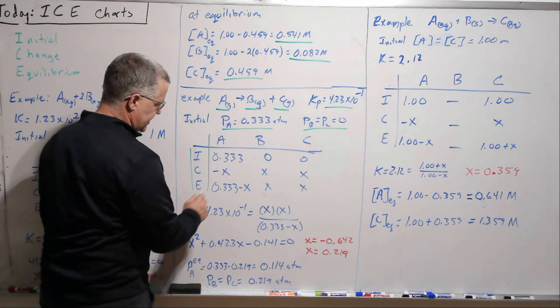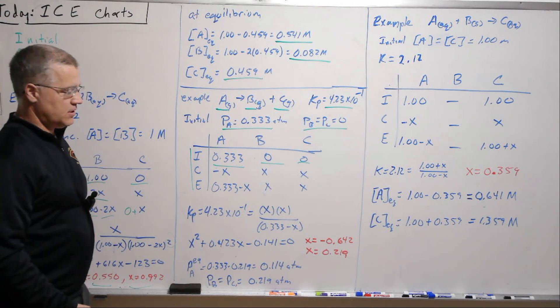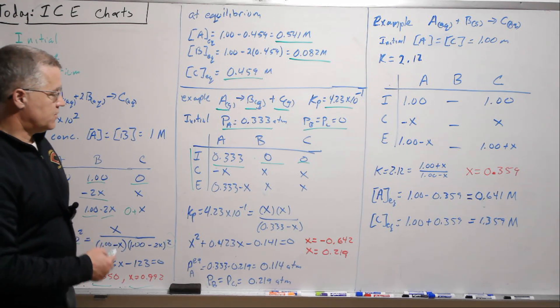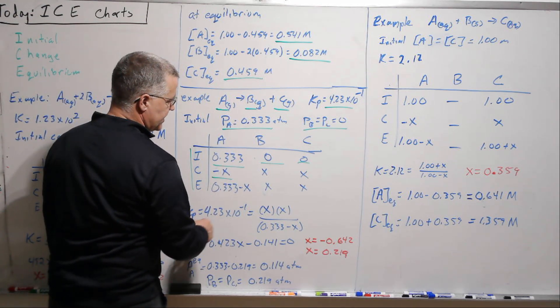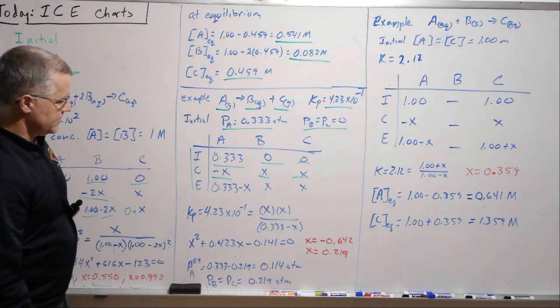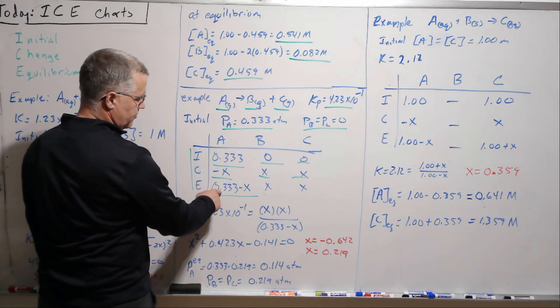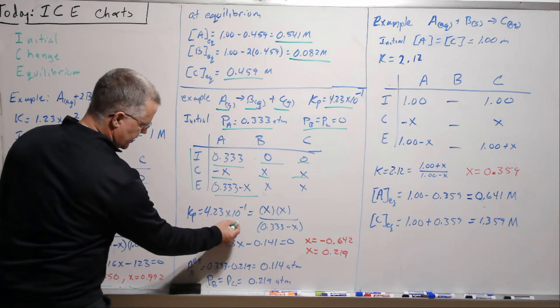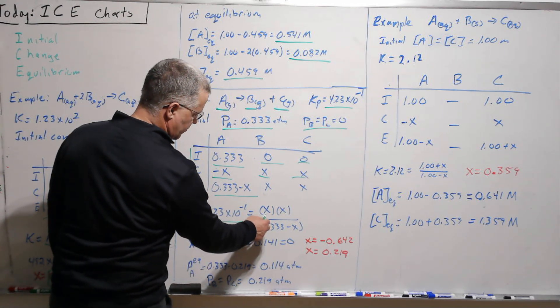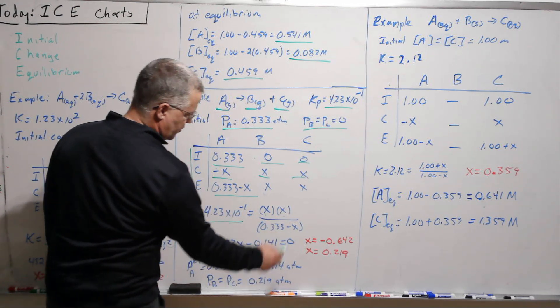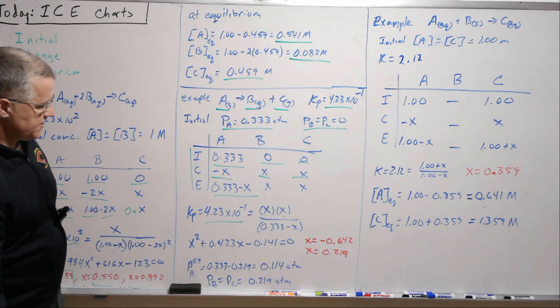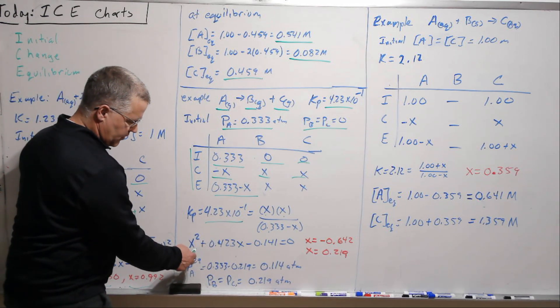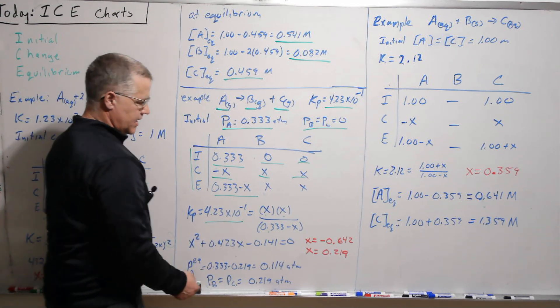So, ICE chart again, ICE. We write in our initial amounts, and this now is in pressure, atmosphere, because we're going to be working with a Kp, so these will be the partial pressures. Then A is going to change by minus X. If that's true, then B and C change by X, and so the equilibrium pressure will be our initial pressure minus X here, X and X. So here is our K. We've got partial pressure of B times partial pressure of C, both of which are X, over partial pressure of A. So that's just Kp. This leads to a quadratic expression right here, and we have two solutions.